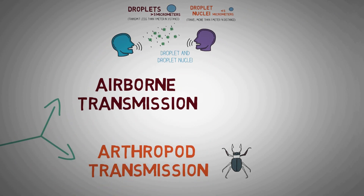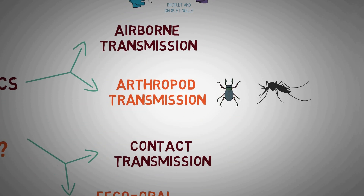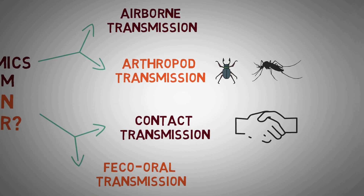Arthropod transmission takes place via an insect — for example, the malaria epidemic spread by mosquitoes. Contact transmission is the mode of transmission when infection spreads from one person to another by touch. In feco-oral transmission, the infectious agent is shed by the infected host in feces and acquired by a susceptible host through ingestion of contaminated food and water.